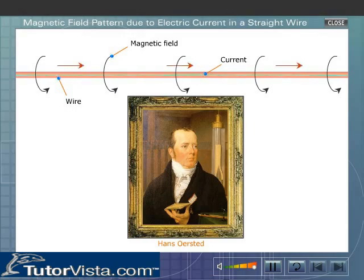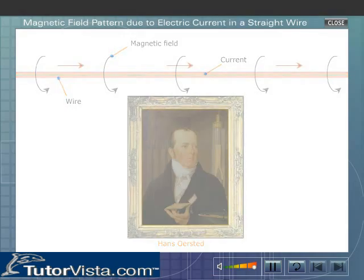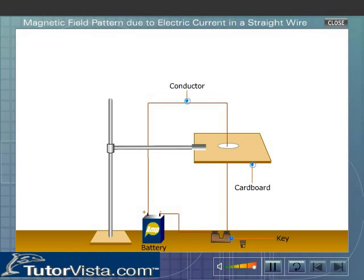Let us now perform an experiment to map the magnetic field. Arrange a copper wire, key, battery, and a thick sheet of cardboard with a hole at its center as shown here. Sprinkle some iron filings on the cardboard.